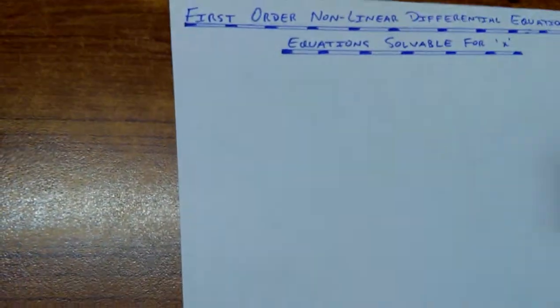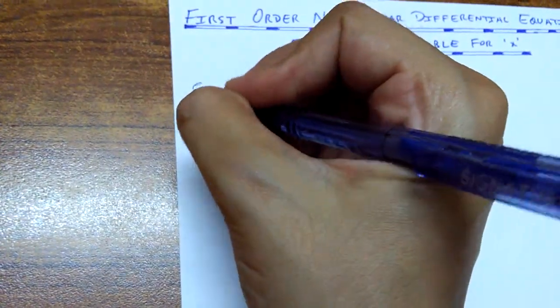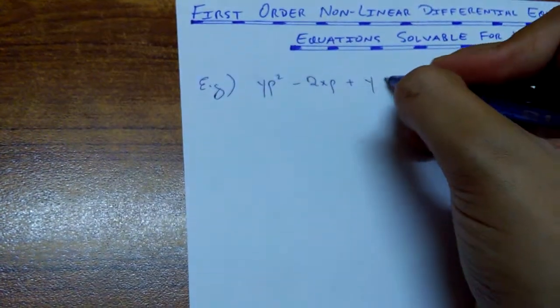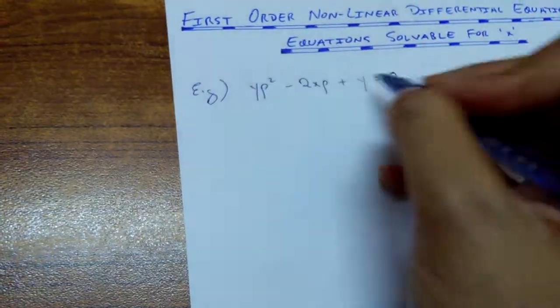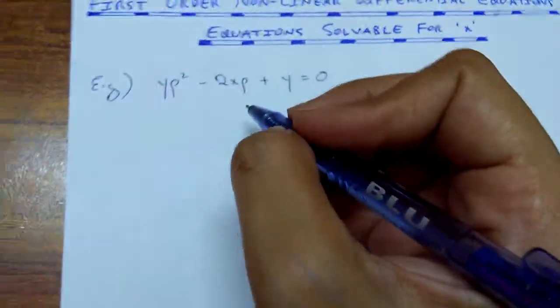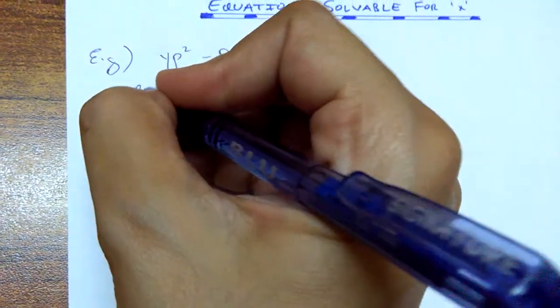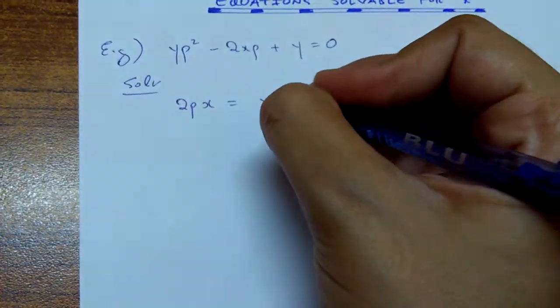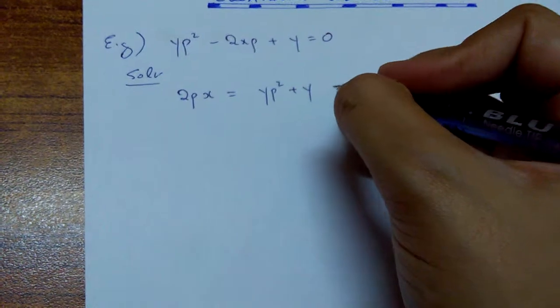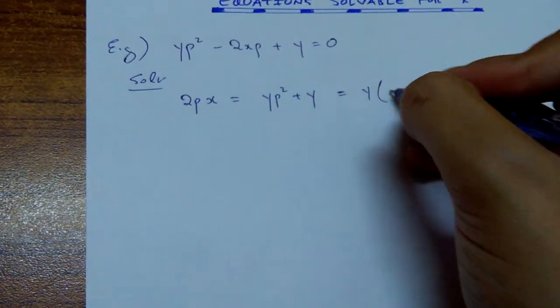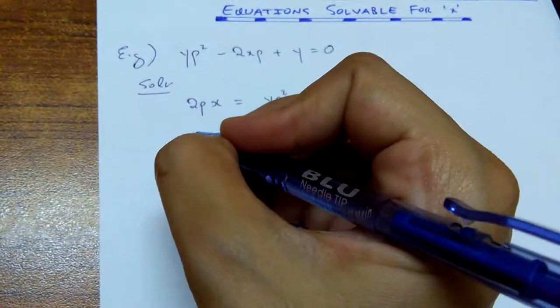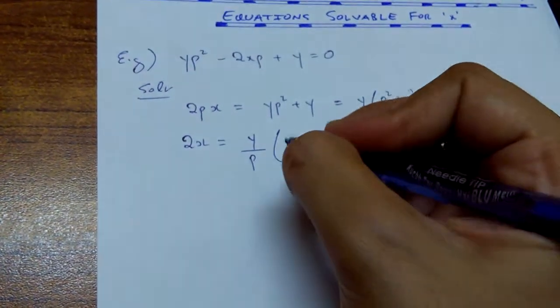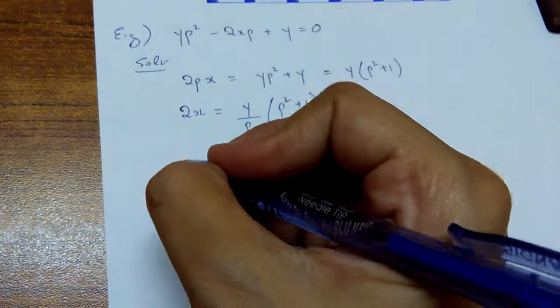So here, if I just pick up an example, I say that it is yp squared minus 2xp plus y equals to 0. So you can see here, in this entire equation, x is coming just once. So you can rewrite this equation keeping x as a subject. So I can write it like this. And also, y is coming common. I can write it this way. So this equation can be transformed, keeping x as a subject.